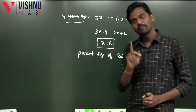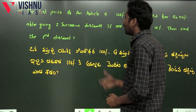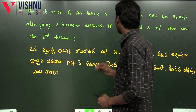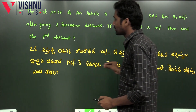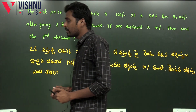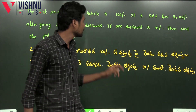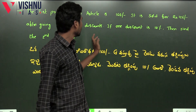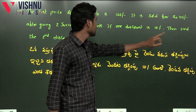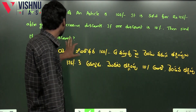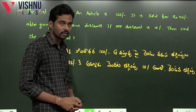Let's see one more question. The list price of an article is Rs. 160. It is sold for Rs. 126 after giving two successive discounts. If one discount is 10%, then find the second discount.